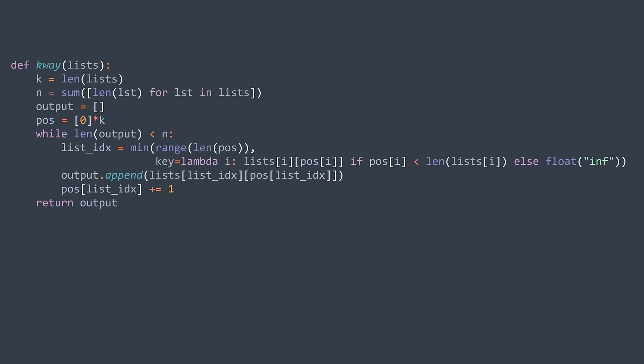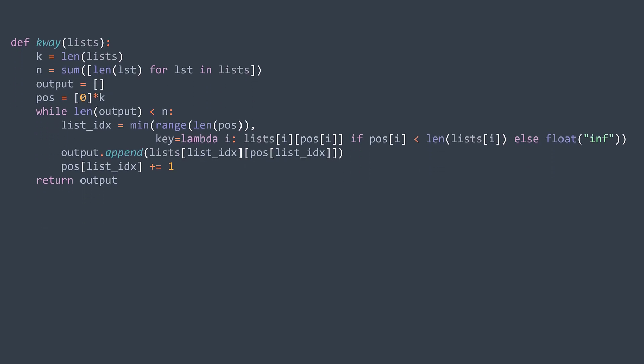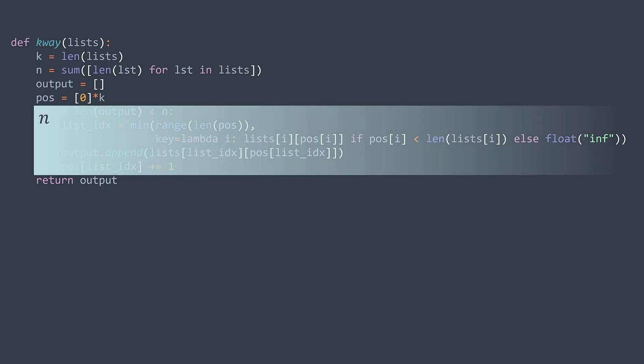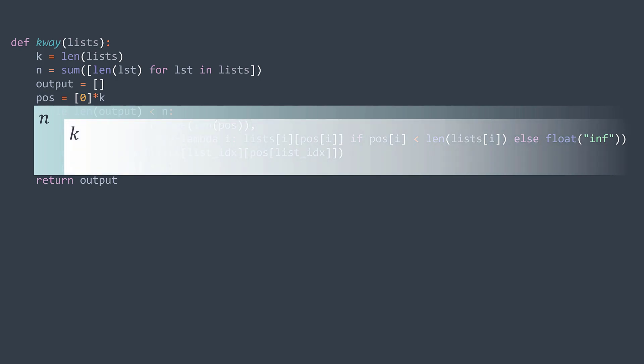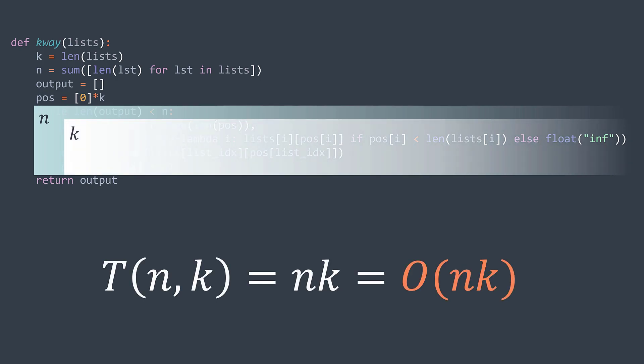For the time complexity, we're inserting one element at each iteration, so we have n iterations. And to get the next element, we're traversing all k indexes to find the minimum, so each iteration costs k. We get an O(n·k) time complexity.